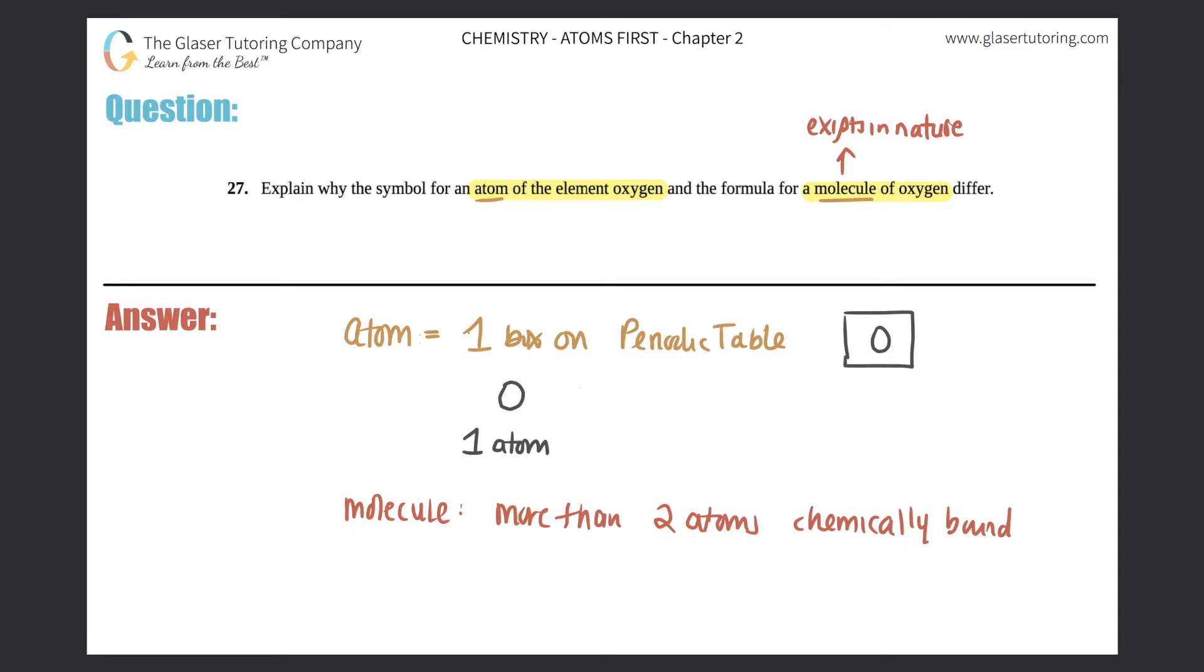So in nature, oxygen will never act as just a single O. Specifically, oxygen is always acting as a diatomic O2. This is called a diatomic. Di in chemistry means two. Atomic means atoms. So O2—two atoms, diatomic.